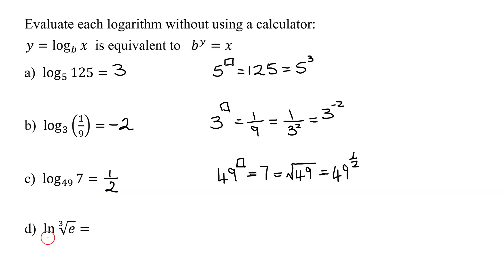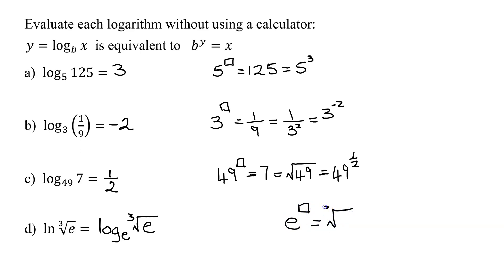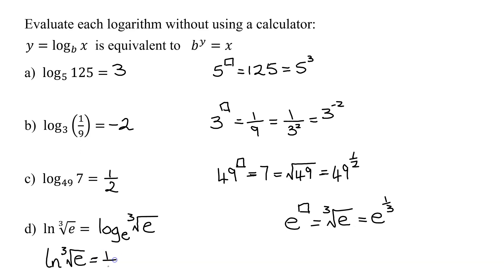In the next example, I have the natural log of the cube root of e. Remember, the natural log is log to the base e of the cube root of e. We need to ask ourselves: e raised to what exponent equals the cube root of e? The cube root of e is just e to the 1/3. So the natural log of the cube root of e equals 1/3.